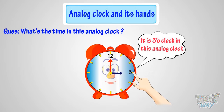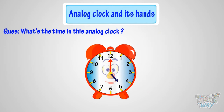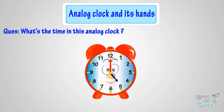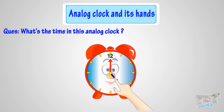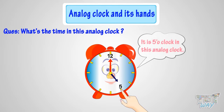Can you tell me what's the time in this analog clock? When the minute hand is at 12, it is time to the hour. But to which hour? The hour hand tells the hour. And the hour hand is pointing at 5 here. So, it's 5 o'clock in this analog clock.